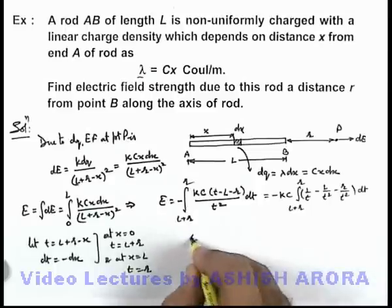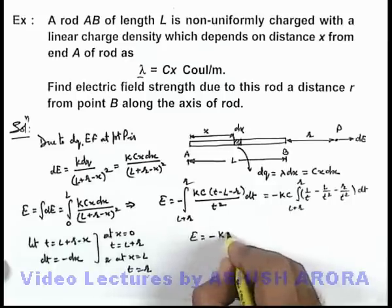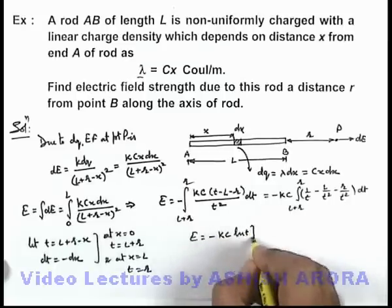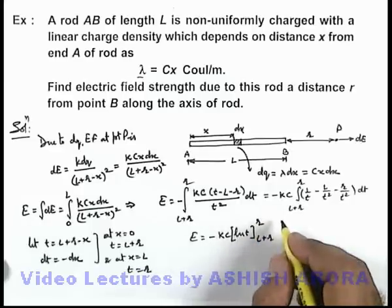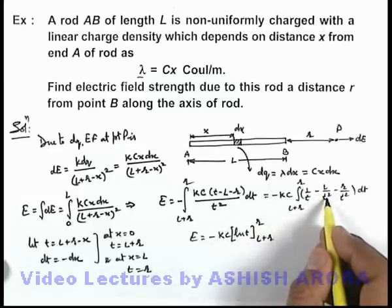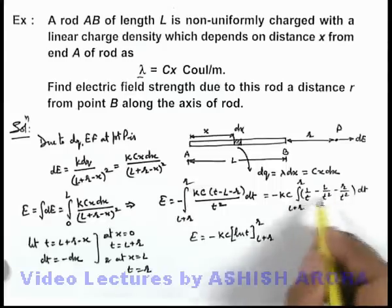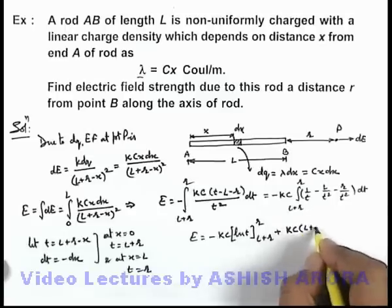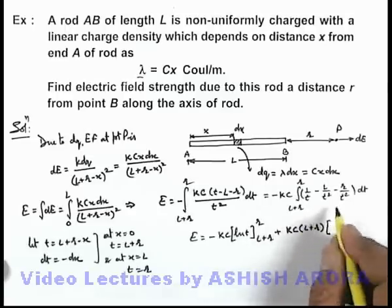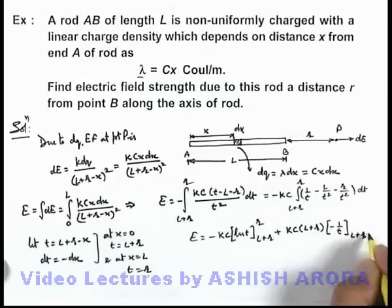On integrating, the electric field becomes −kc · [ln t + (l+r)/t · (−1)] evaluated from l+r to r. Since integrating 1/t² gives −1/t, the minus signs combine to give a plus term: +kc·(l+r) · [−1/t] from l+r to r.